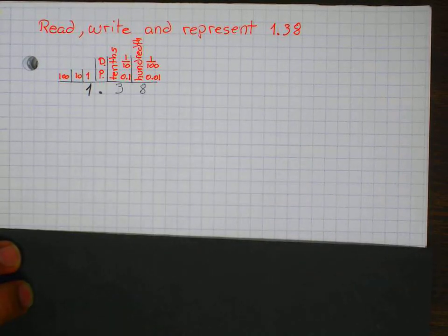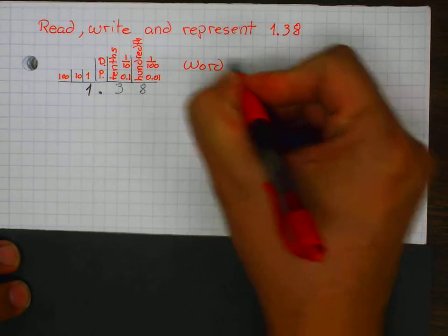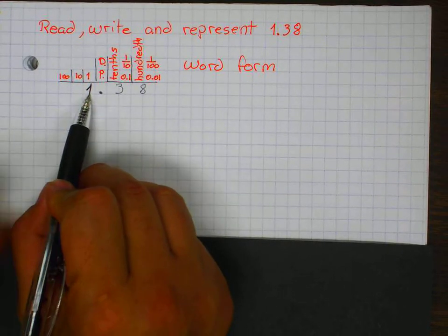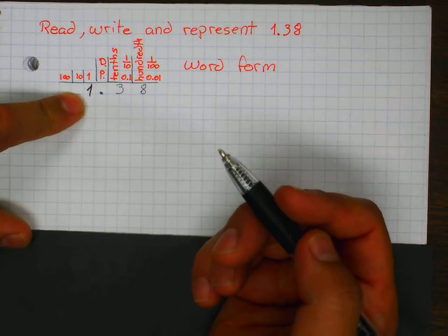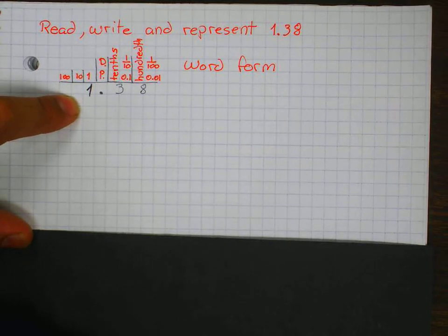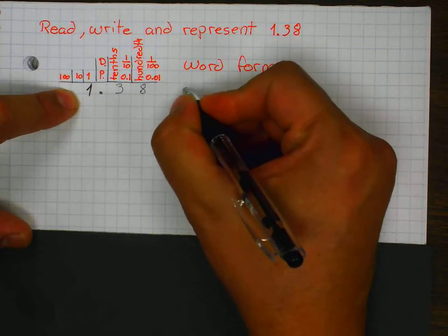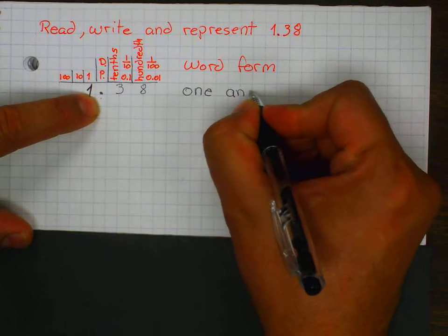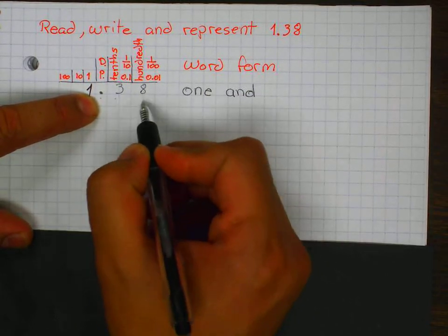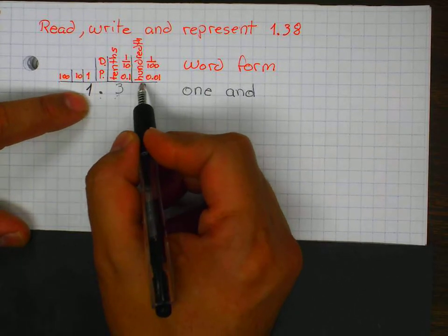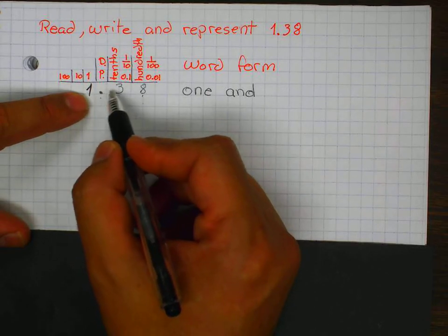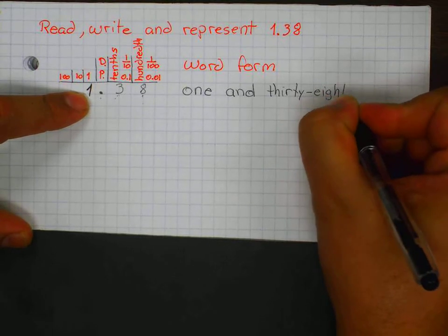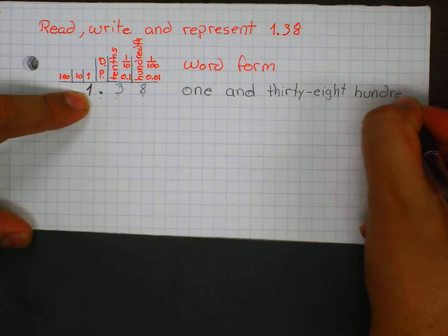Now the word form of the number. To read the number, first I'm going to start with my whole numbers. My first number is one. The decimal point is represented — I use the word 'and' for the decimal point. And I'm going to read the rest of the decimal number: 38. I need to name the last place value. So this is 1 and 38 hundredths. The last place value is the hundredths. This is the word form of the number.